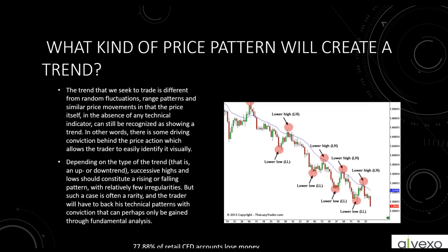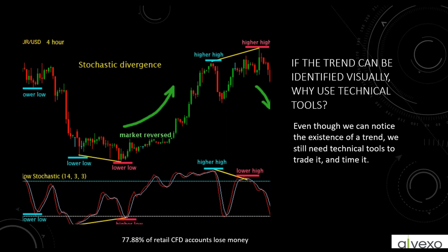In our type of trading, it happens very quickly. Depending on whether it's an uptrend or downtrend, successive highs and lows constitute a rising or falling pattern with relatively few irregularities. Those irregularities are what rule-based trend line systems don't account for — but trend trading allows for them. Such a case is often a rarity, and the trader will have to back their technical patterns with conviction gained through other types of analysis.